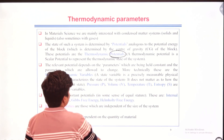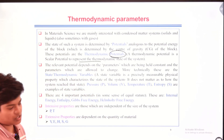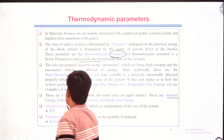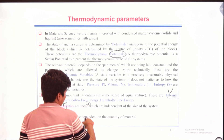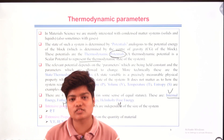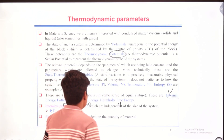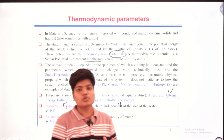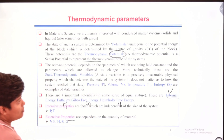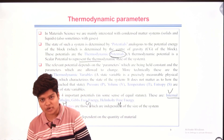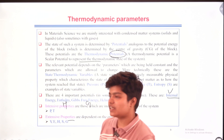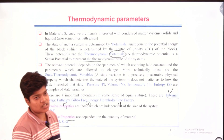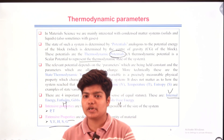Thermodynamic potentials can be four types: internal energy U, enthalpy H, Gibbs free energy, and Helmholtz free energy. The state variables in thermodynamics are pressure, volume, temperature, and entropy. We also need to remember two terms: intensive property and extensive property. Intensive properties are independent of the size of the system — examples are pressure and temperature. Extensive properties depend directly on the amount of matter — examples are volume, energy, Gibbs free energy, and Helmholtz energy.